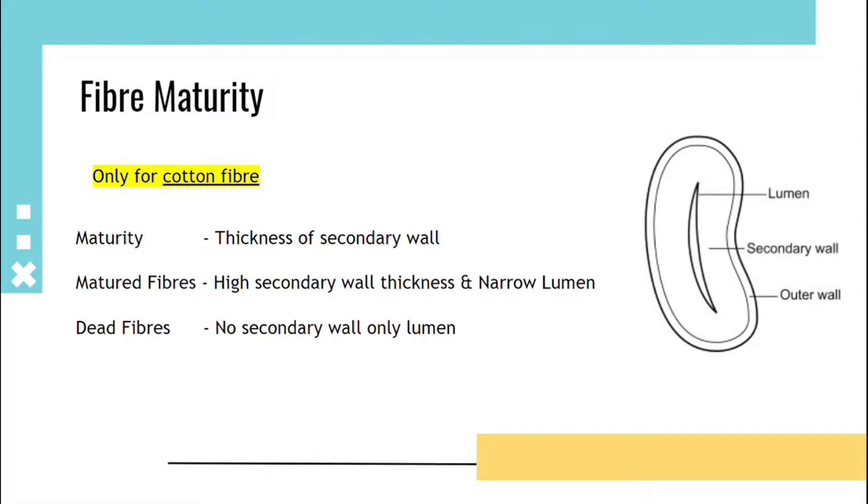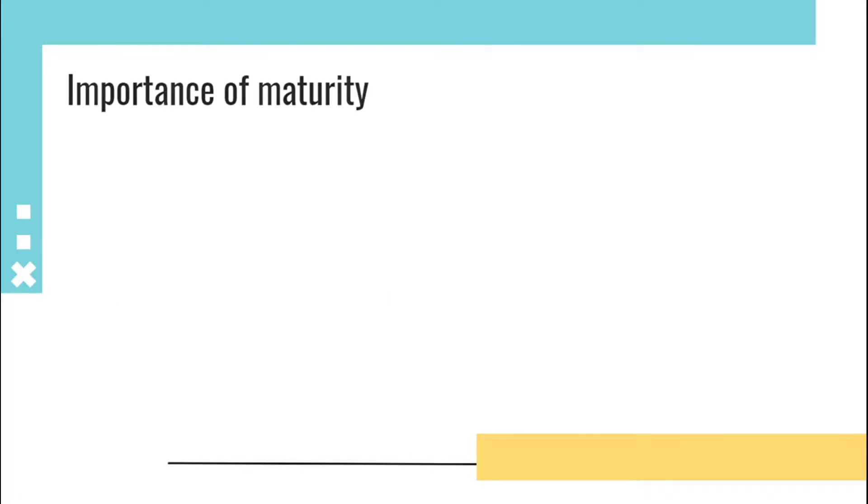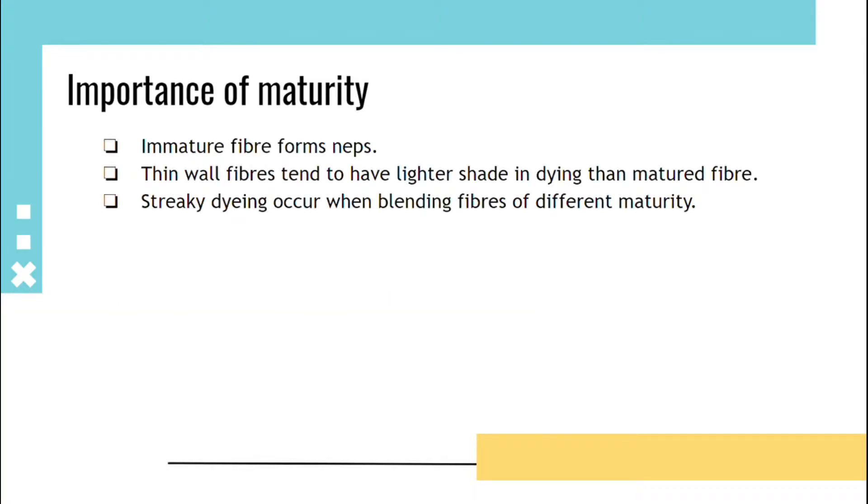secondary wall thickness and narrow lumen. Dead fibers have no secondary wall, only lumen is present. Importance of maturity: immature fiber forms neps, thin wall fibers tend to have lighter shade in dyeing than mature fibers, and streaky dyeing occurs when blending fibers of different maturity.